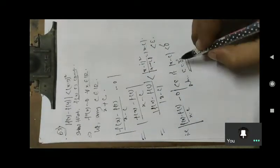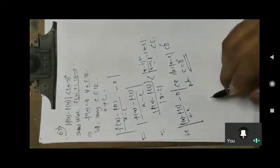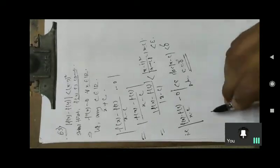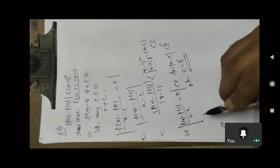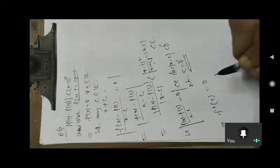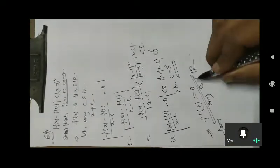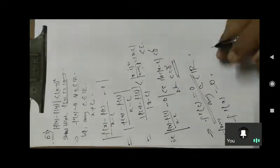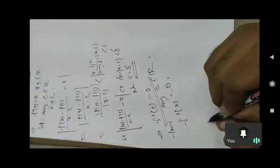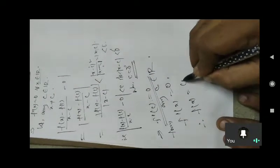So if it satisfies the modulus condition, then η = 0. For any c in ℝ, η equals 0. So f(x) - f(c) = 0, therefore f(x) = f(c).